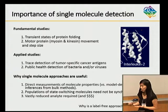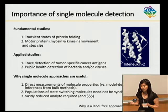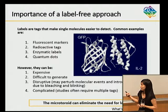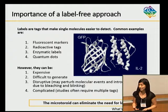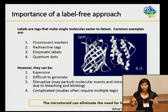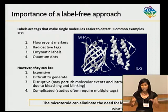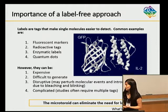One main advantage of our technology is that it's label-free. Labels are tags that make molecules easier to detect — examples are fluorescent markers, radioactive tags, enzymatic labels, quantum dots. But they're expensive, can be difficult to generate, can perturb events, can bleach, can blink. GFP — green fluorescent protein — is probably the most famous fluorescent tag. Right next to it is interleukin-2, a signaling molecule involved in cancer, and they're roughly the same order of magnitude in size. So binding GFP to IL-2 could really perturb studies. Our technology, based on an optical resonator known as a microtoroid, can eliminate the need for labels.